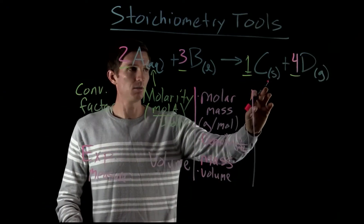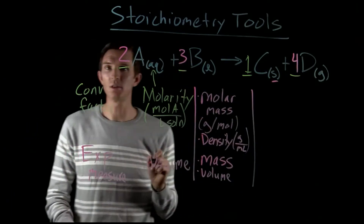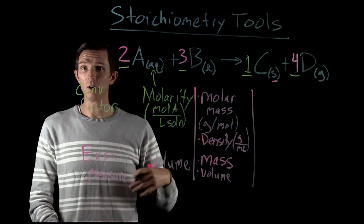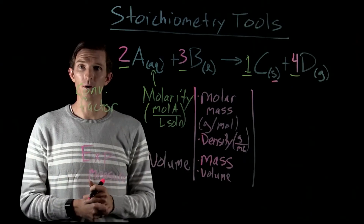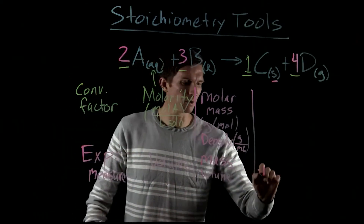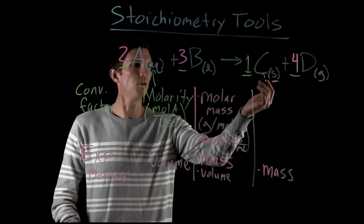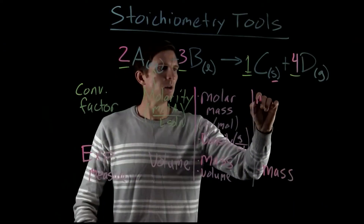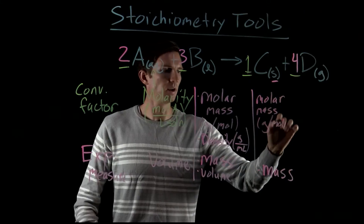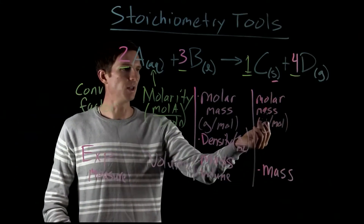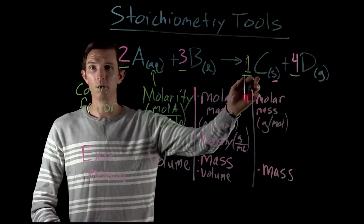Now we look at our product and maybe we're going to predict the mass of that product that we would make. We talk about mass because we're dealing with a solid here. Typically with solids, it's not easy for us to measure volume because it doesn't fill the container like a liquid would. So typically we measure the mass of a solid, and then we use molar mass as our conversion factor — grams per mole — to relate mass to the number of moles.